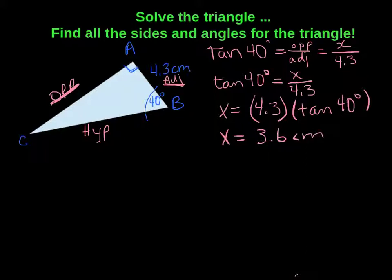I'm going to write that on my triangle so I can keep track of all the sides and all the angles that I've figured out so far. So that opposite side, which is side AC, or also known as lowercase b, is 3.6 centimeters.